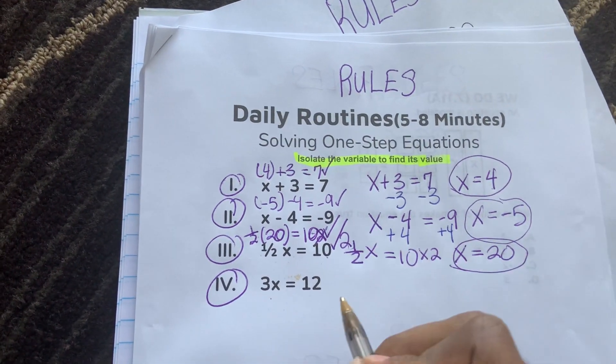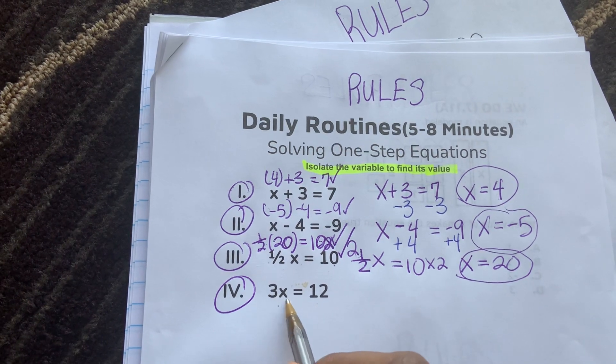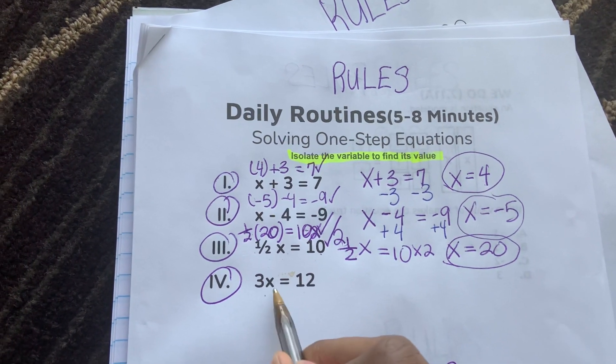In this case here, to get x by itself, we know that the 3 and the x are together because they like each other, they want to multiply.